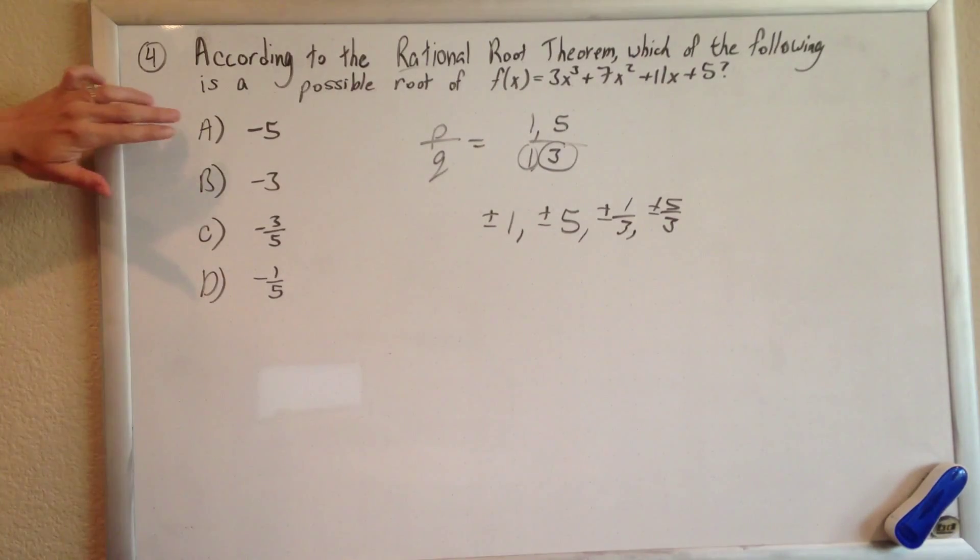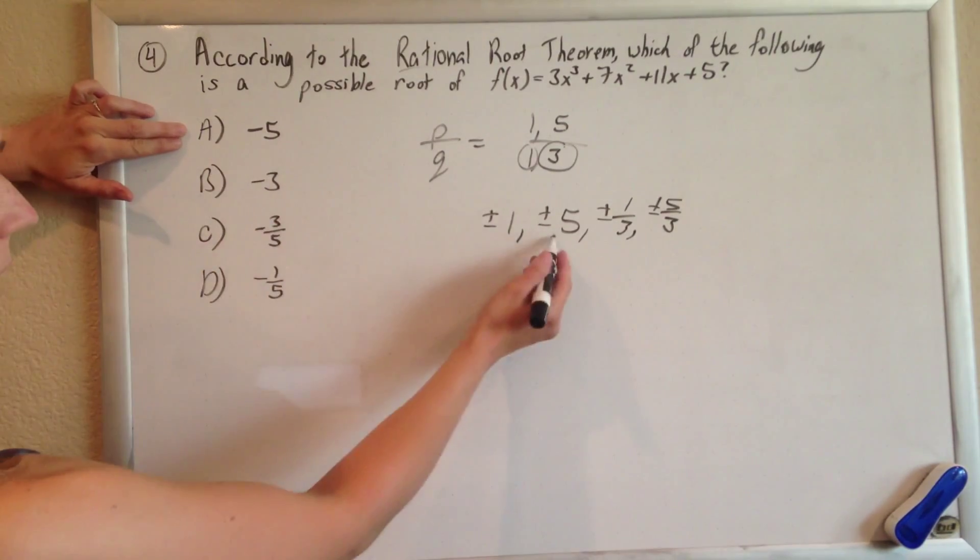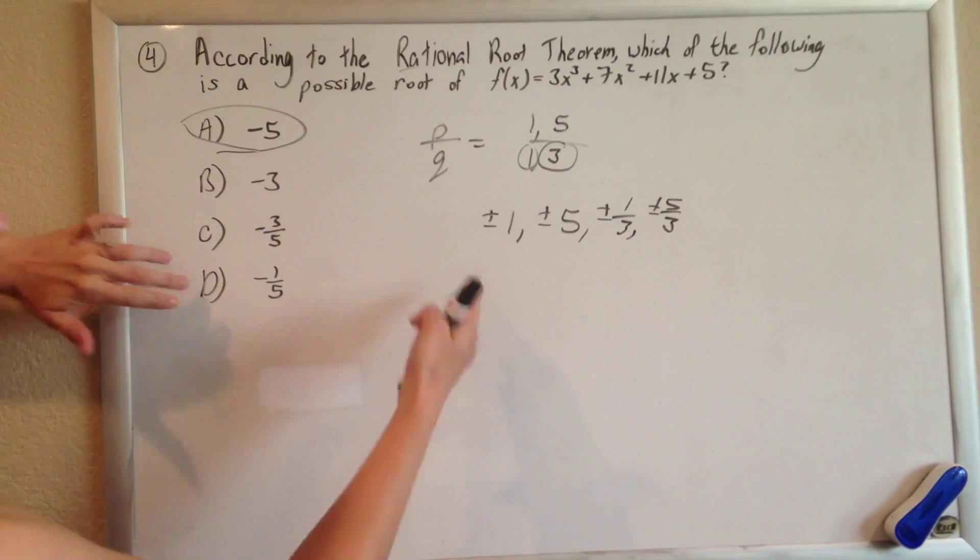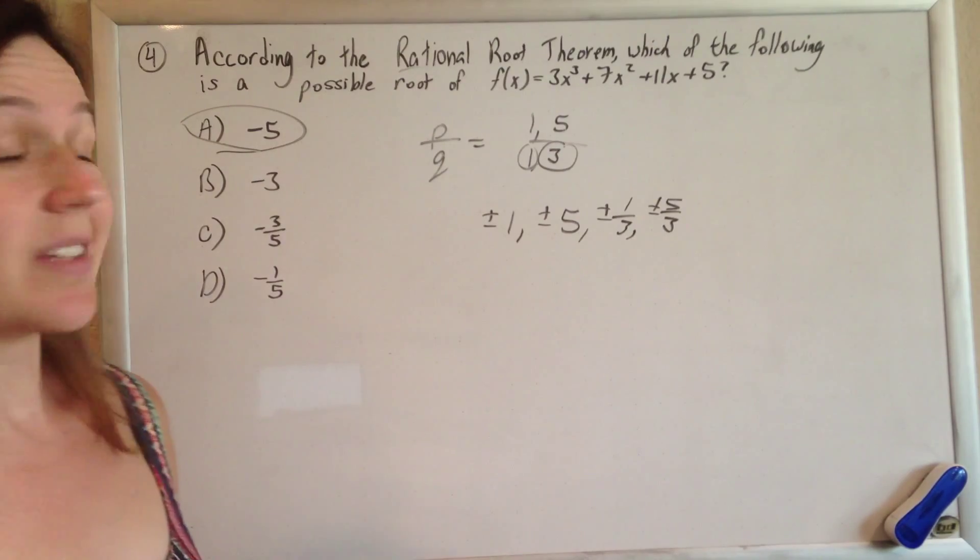And so, we go and, oh, there it is right away. Negative 5. Bam. Negative 3 is not there. Just making sure we didn't miss anything. None of these other ones are there. The answer is A. We're done.